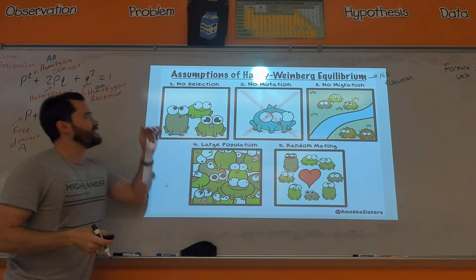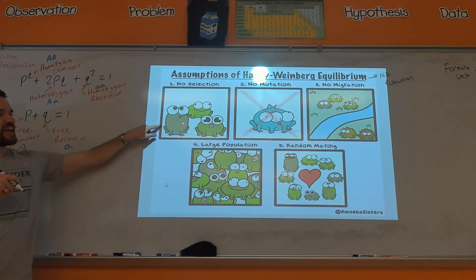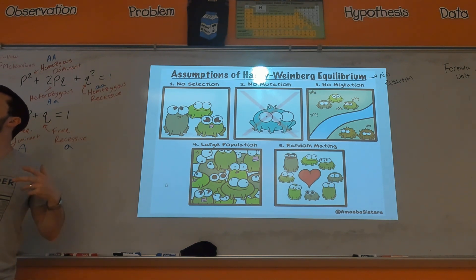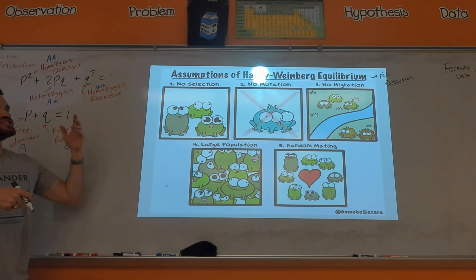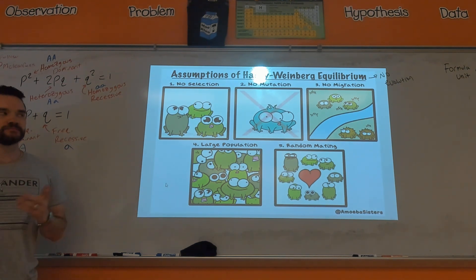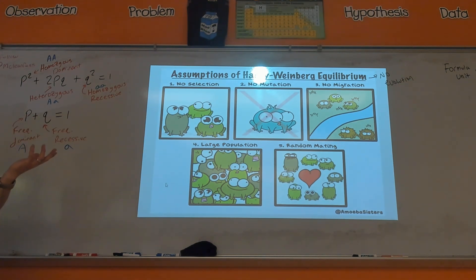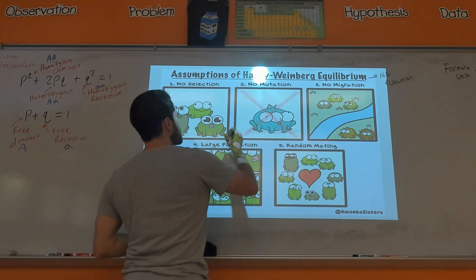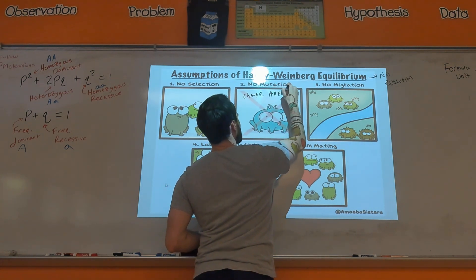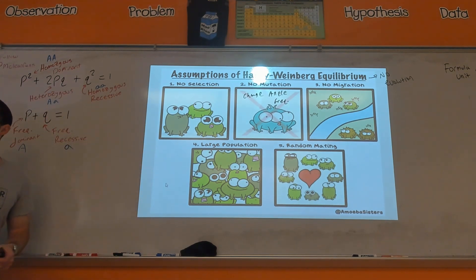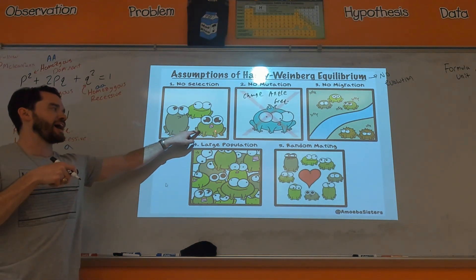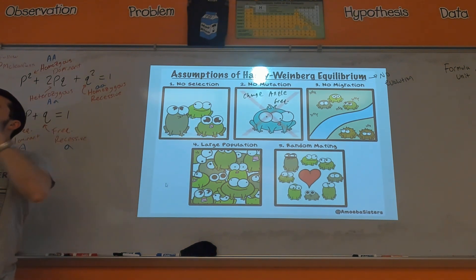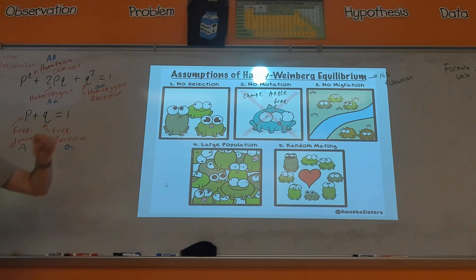The first condition is no selection — meaning whether you're one color or another doesn't give you an advantage to survive and reproduce. The differences represented by these frogs don't cause them to survive better in the environment. The second is no mutations, because mutations will cause changes in allele frequencies. If a dominant allele mutates to become recessive, that changes allele frequencies, which would be evolution. The third is no migration.